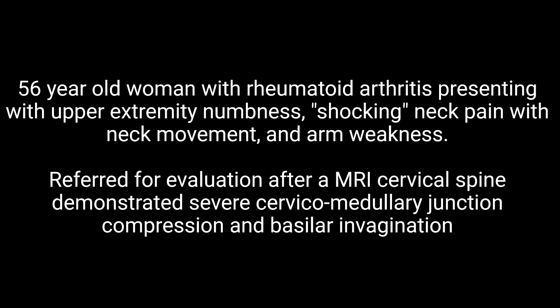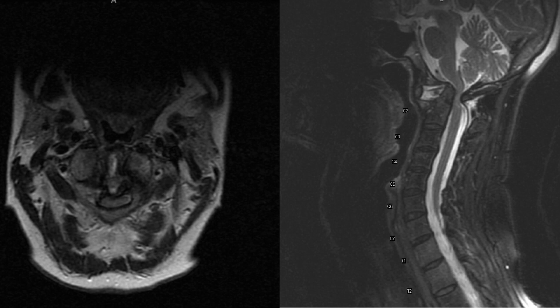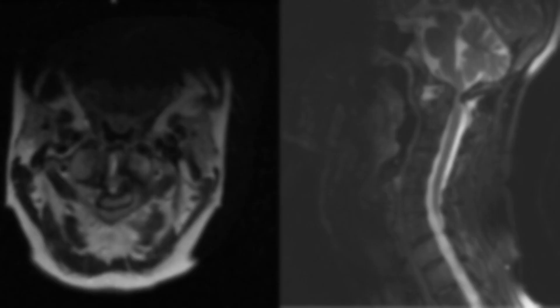The patient is a 56-year-old woman with rheumatoid arthritis who presented to clinic with upper extremity numbness, shocking neck pain with movement, and progressive upper extremity weakness. Her cervical MRI demonstrated severe cervical medullary junction compression and basilar invagination, as seen here on axial and sagittal T2 sequences.